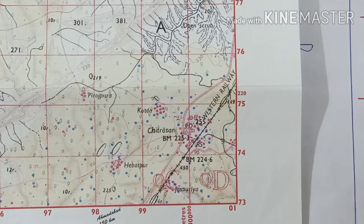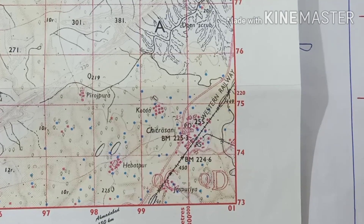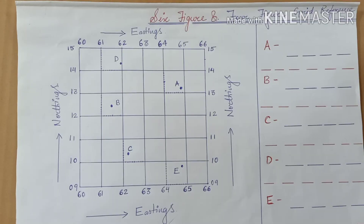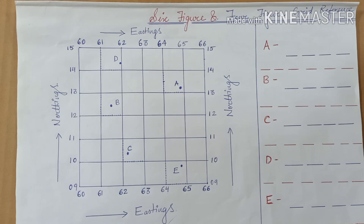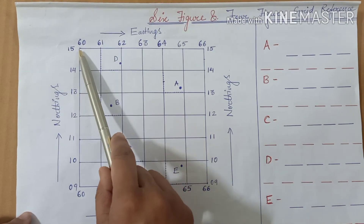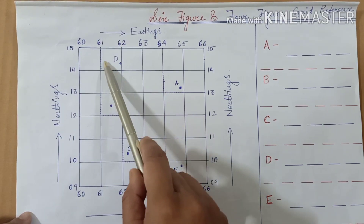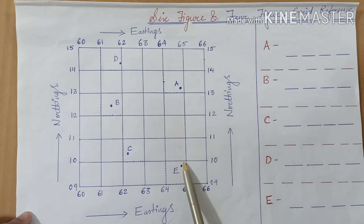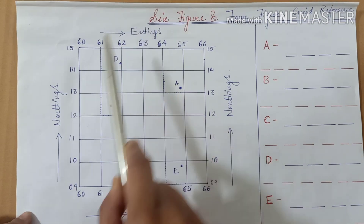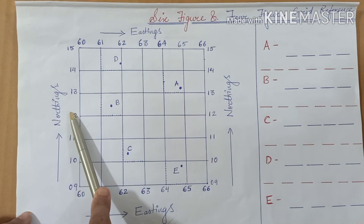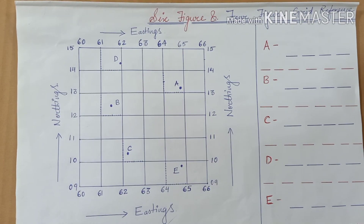Now we will see how to locate a place using four figure grid reference. Here I have drawn certain lines — the grids showing eastings and northings. This pattern has been drawn to make you learn about how to calculate four figure grid reference.